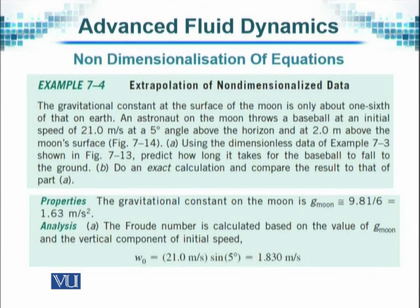The gravitational constant at the surface of the moon is only about one-sixth of that of the earth, so gravity at the moon is one-sixth of what we have on earth. An astronaut on the moon throws a baseball at an initial speed of 21 meters per second at a five-degree angle above the horizon and at two meters above the moon's surface. Using the dimensionless data, predict how long it takes for the baseball to fall to the ground.